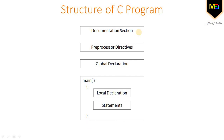Let's start with the documentation section. The documentation section consists of a set of comment lines giving the name of the program, the author, and other details which the programmer would like to use later. Next is the preprocessor directives section, which contains special instructions that indicate how to prepare the program for compilation. The global declaration section will be discussed later as and when it is required.